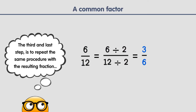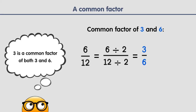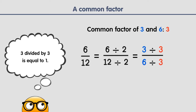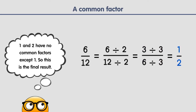The third and last step is to repeat the same procedure with the resulting fraction, until there are no more common factors other than 1. So, 3 is a common factor of both 3 and 6. 3 divided by 3 is equal to 1, and 6 divided by 3 is equal to 2. The fraction reduces to a half. 1 and 2 have no common factors except 1, so this is the final result.